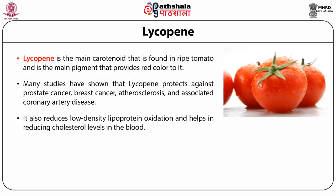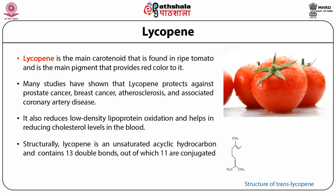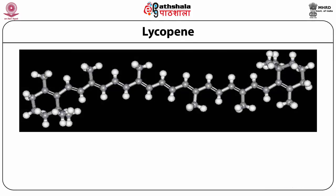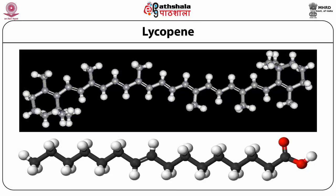Lycopene reduces low-density lipoprotein oxidation and helps reduce cholesterol levels in the blood. Structurally, lycopene is an unsaturated acyclic hydrocarbon containing 13 double bonds, of which 11 are conjugated. It is this structure that will subsequently lend it a limitation. A careful look at the carbon skeleton of lycopene shows similarity to the structure of a lipid shown below, indicating that carotenoids, much like lipid-like molecules, have structural limitations in terms of solubility.